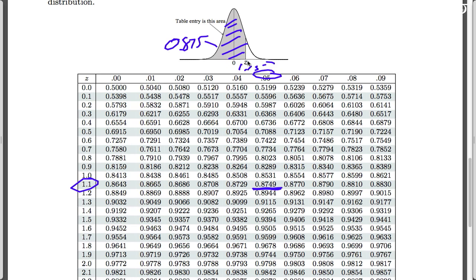So 1.15 is our appropriate z value for a 75% confidence interval.